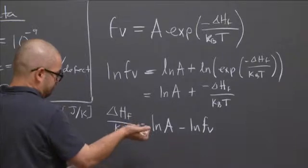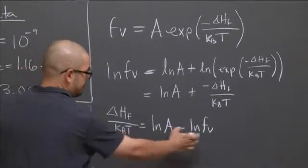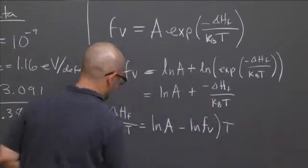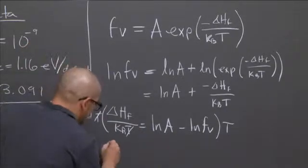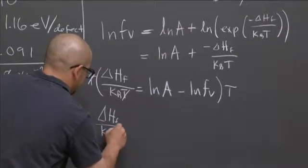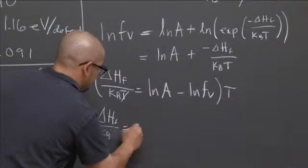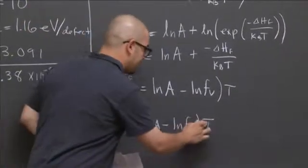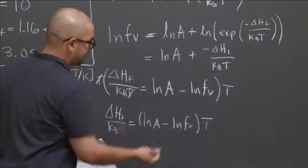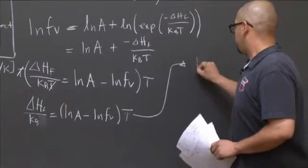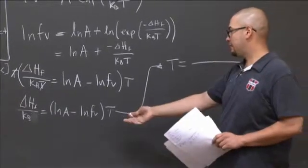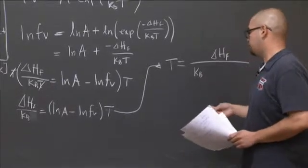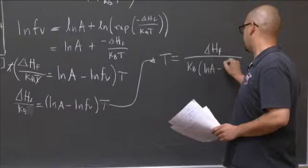The only thing we don't know here is temperature. If I rearrange this equation and solve for temperature, I can get an answer. I can move this to the other side. That gives me delta H_f divided by K_B T equals natural log of A minus natural log of your vacancy fraction. And I can then multiply both sides by T, so it cancels this one and it arises over here, and divide both sides by the ln term.